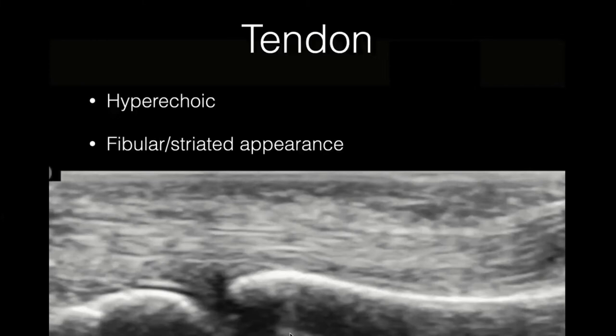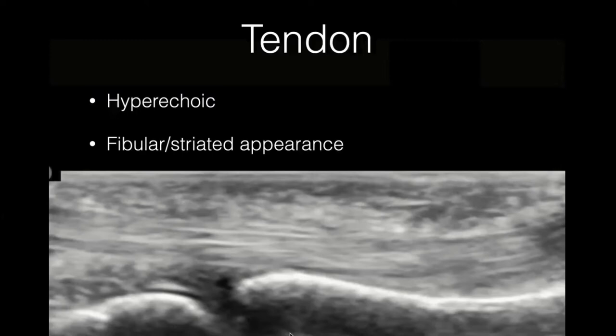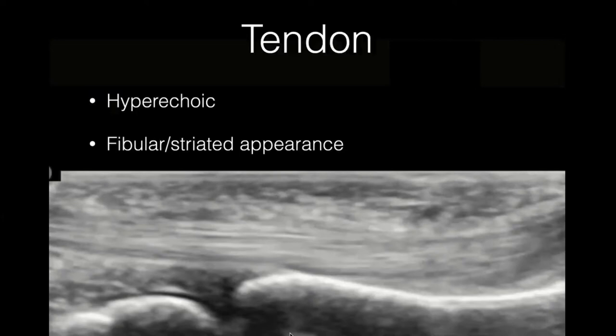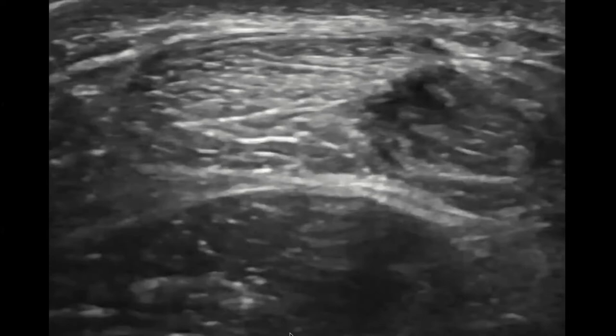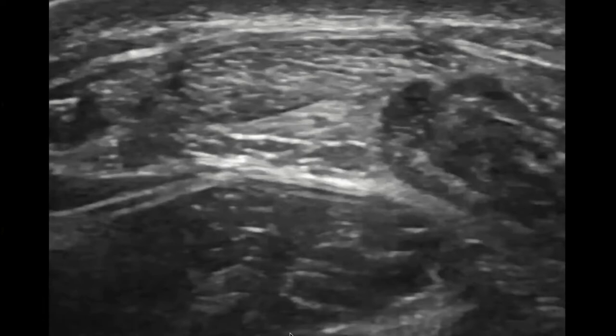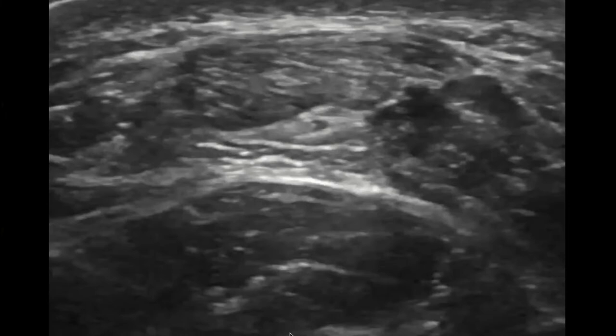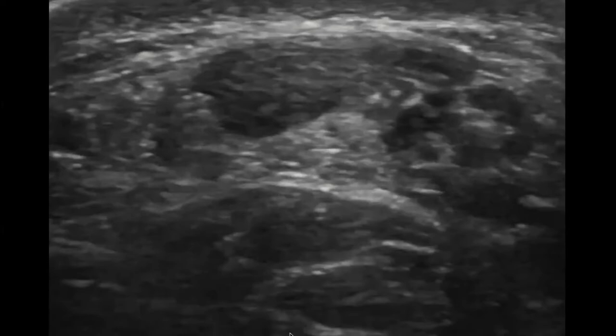Tendons are usually hyperechoic, very fibular and striated, with a very organized, almost homogeneously organized echo texture — very linear and streaky. You'll often see them moving if you scan dynamically. In short axis you see an oval-shaped structure with a similar granular density. If muscles are like 80-grade sandpaper, tendons are like 100-grade sandpaper.